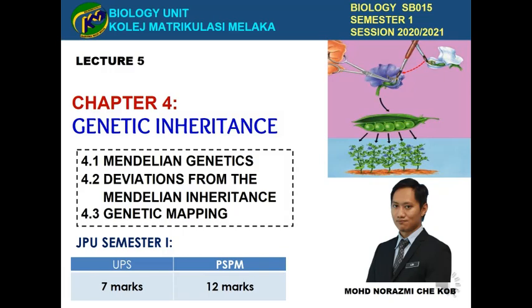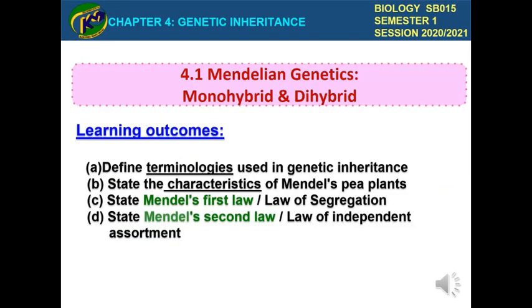Assalamualaikum warahmatullahi wabarakatuh and selamat sejahtera. Welcome back to another online lecture session. This is Lecture 5, titled Chapter 4: Genetic Inheritance. By the end of this lesson, you should be able to define the terminologies used in genetic inheritance, state the characteristics of Mendel's pea plant, state Mendel's first law — the Law of Segregation — and state Mendel's second law — the Law of Independent Assortment. Let's start with the terminologies.